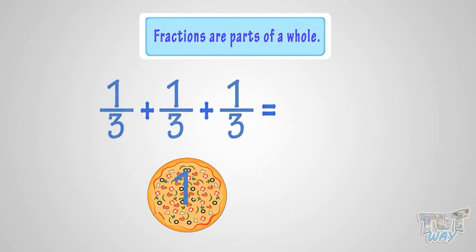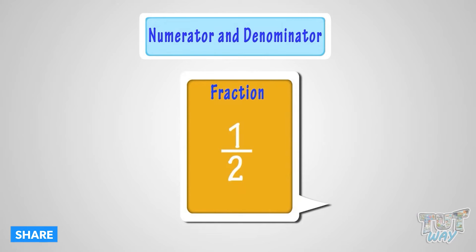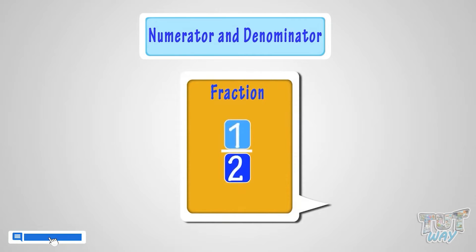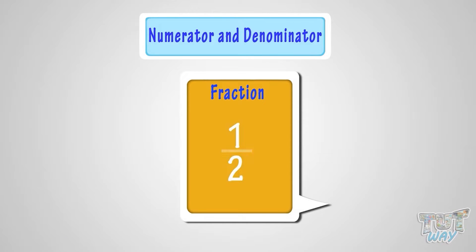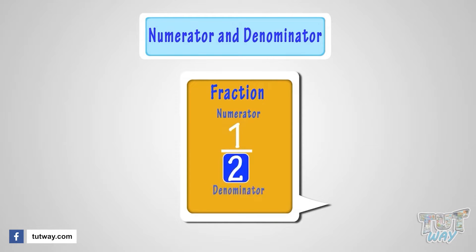Now let's learn what is a numerator and denominator. In a fraction, two numerals are written one below the other, separated by a line. The numeral written above the line is called numerator and the numeral written below the line is called denominator.